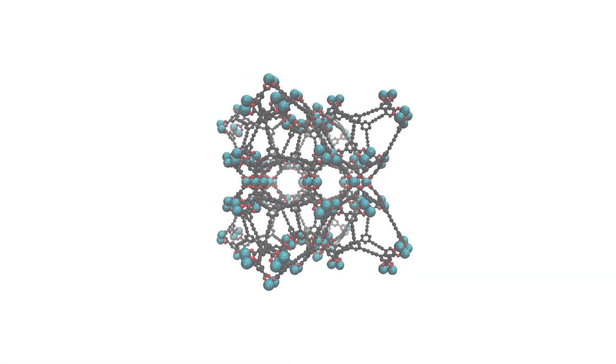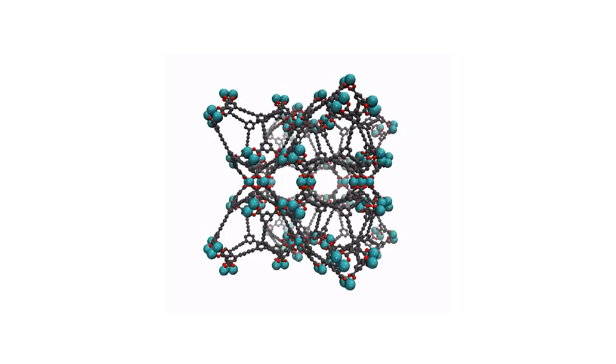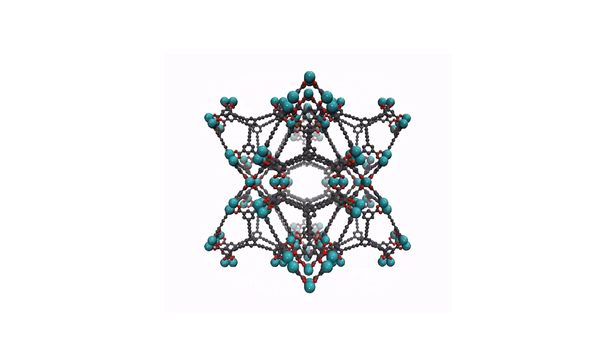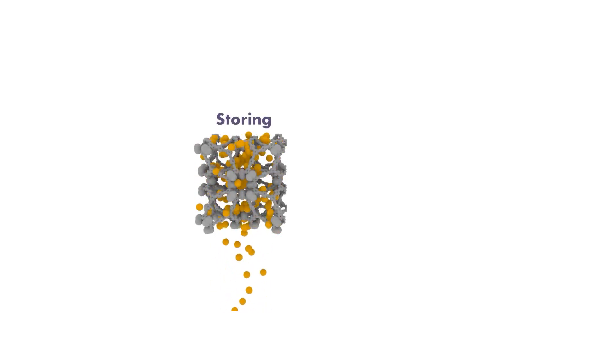What does that mean? In one gram — and a gram would be about half of a sugar package — that material would have almost the surface area of a soccer field. Imagine if you take that gram and unfold it, which we cannot actually do, but if you could, with that one gram you could spread and cover a whole football field or soccer field in that small amount. And that's what gives us the ability to store gases.